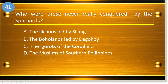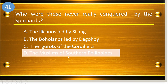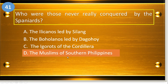Number forty-one: who were those never really conquered by the Spaniards? A, the Ilocanos led by Silang; B, the Boholanos led by Daguhoy; C, the Igorots of the Cordillera; and D, the Muslims of Southern Philippines. The answer is letter D, the Muslims of the Southern Philippines.